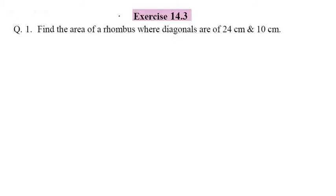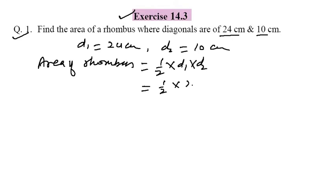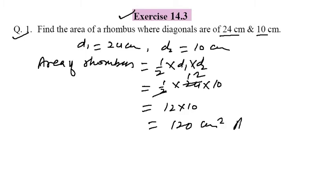Now come to Exercise 14.3, Question 1. Find the area of rhombus where the diagonals are given: D1 = 24 cm and D2 = 10 cm. Area of rhombus = 1/2 × D1 × D2 = 1/2 × 24 × 10 = 12 × 10 = 120 cm².